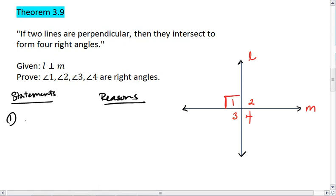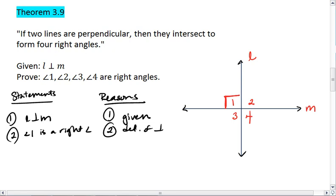Our first statement is that L is perpendicular to M, and that's a given. We then know that angle 1 is a right angle. That's the definition of perpendicular lines. If angle 1 is a right angle, then that means the measure of angle 1 is 90 degrees. And that's the definition of a right angle.